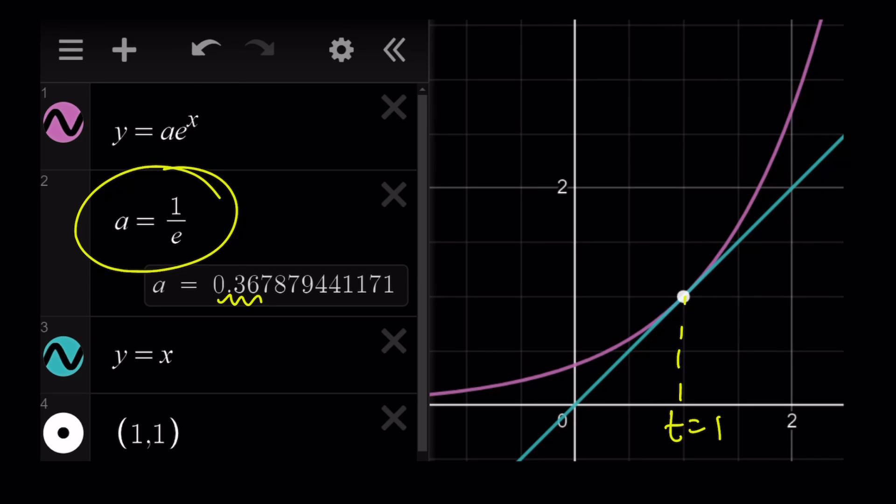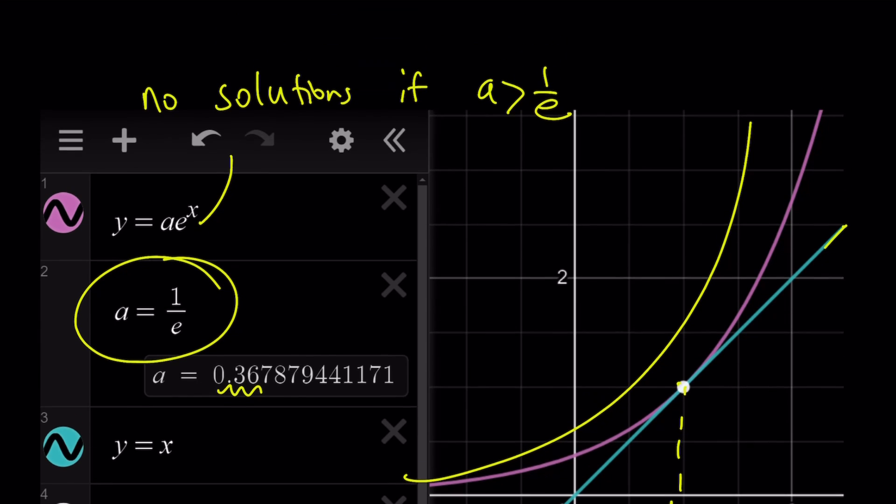Now what happens if the a value increases, then our exponential is going to grow faster. And these two graphs will not touch. So for those kinds of values, our graphs are not going to be intersecting. And not intersecting means there's going to be no solutions. So we can safely say that there are no solutions if a is greater than one over e, because this is going to grow much faster. And by the way, this diagonal is going to be fixed, but our exponential is variable.